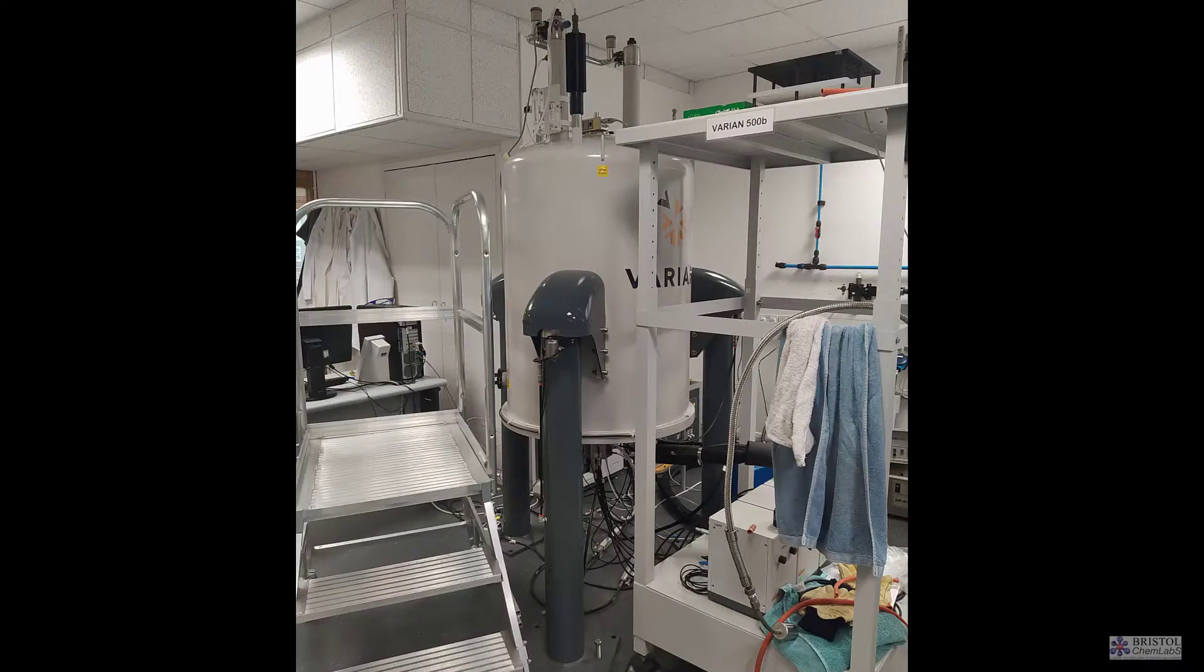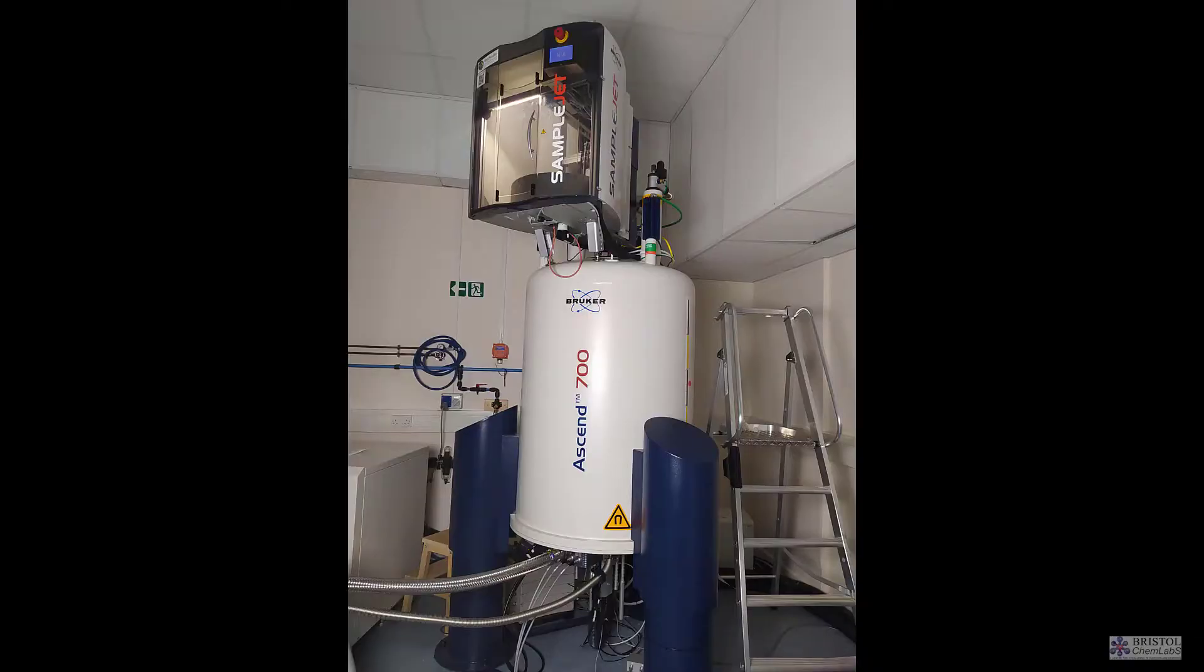We have a range of different NMR spectrometers here in Bristol, from small, what we call 300 megahertz NMR spectrometers, up to very large 700 megahertz NMR. The biggest NMR spectrometer in the world at the moment is a 1 gigahertz spectrometer in France. As you go to larger magnetic fields, they become more expensive, but they give you a lot more capabilities.